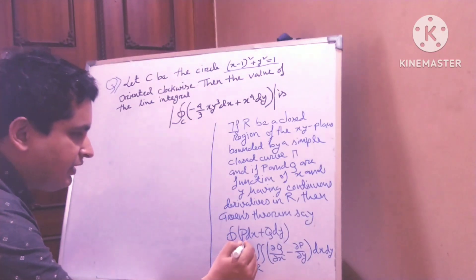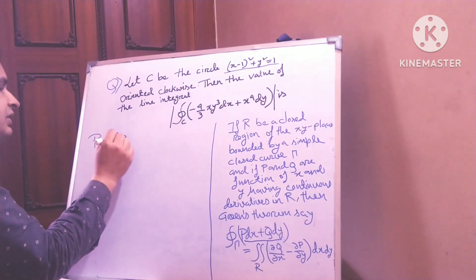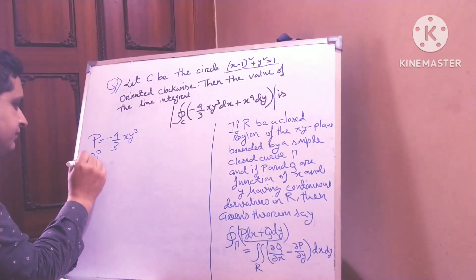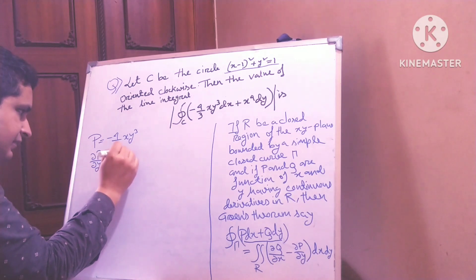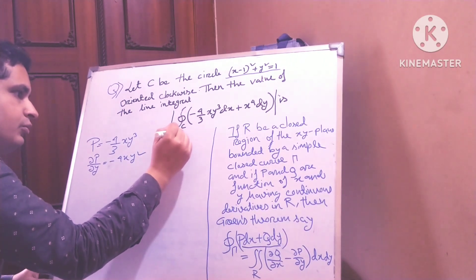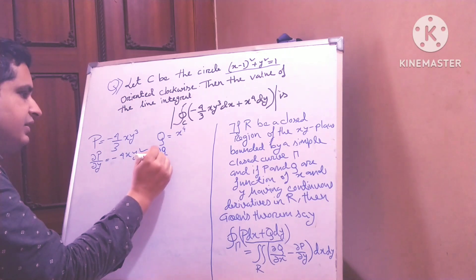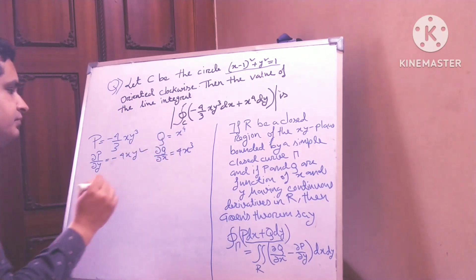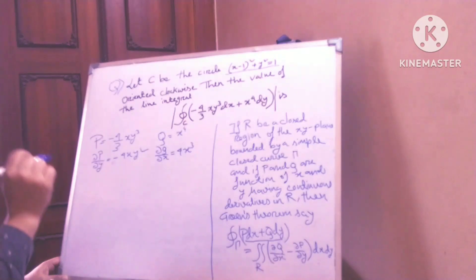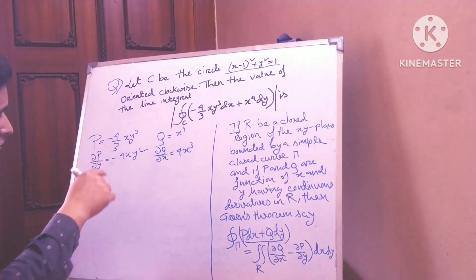So friends, you must remember P dx. Here P equals minus 4/3 x y cubed. So del P / del y equals minus 4x y squared. And Q equals x to the power 4. So del Q / del x equals 4x cubed. This is my total fact.